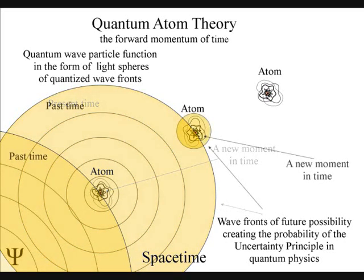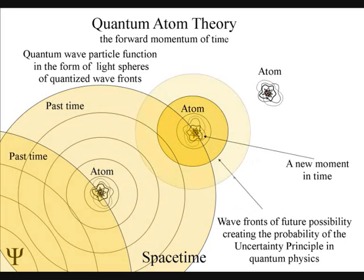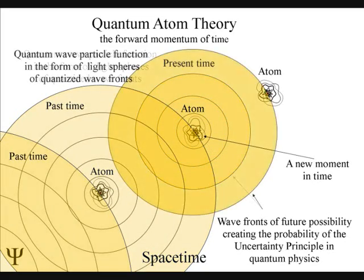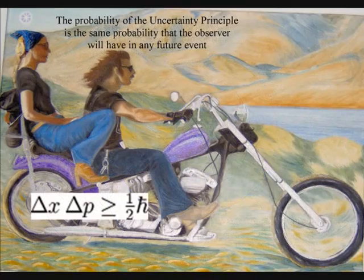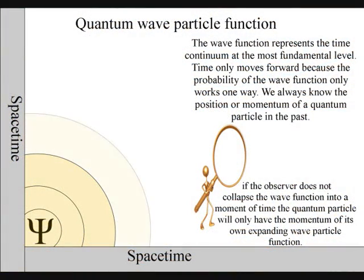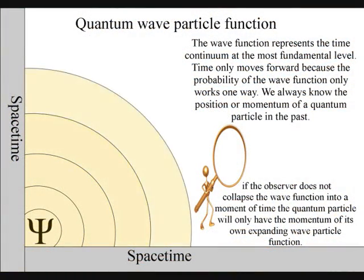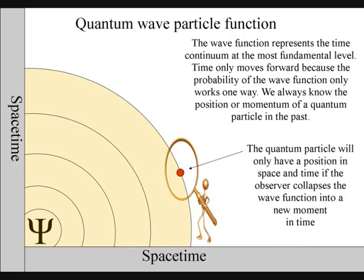The uncertainty principle of quantum physics is the same probability that the observer will have with any future event. This is because the wave function of quantum physics represents the time continuum at the most fundamental level.